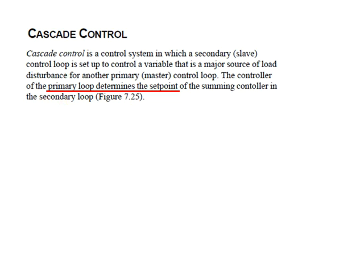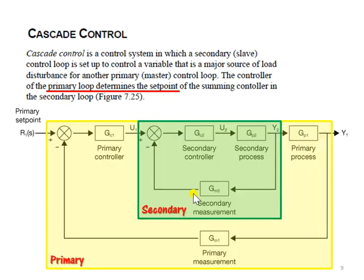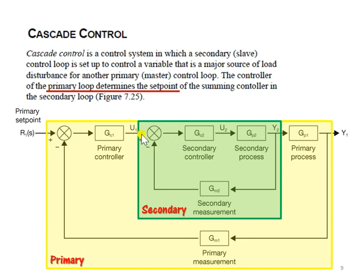In the figure, the green block is the secondary loop and the yellow block is the primary loop. Let's look at the secondary loop first. In the secondary loop, it is a common closed loop arrangement where we have the set value and negative feedback.